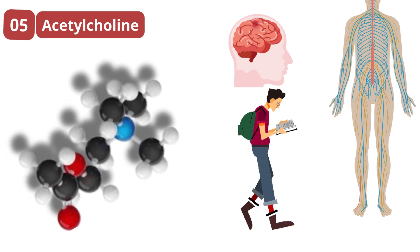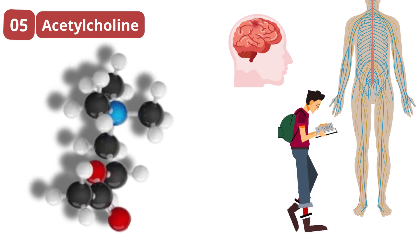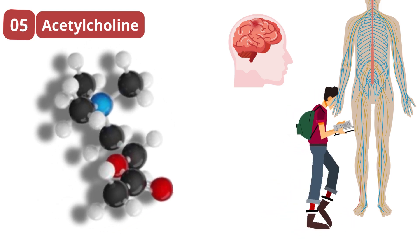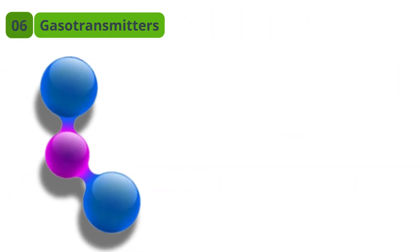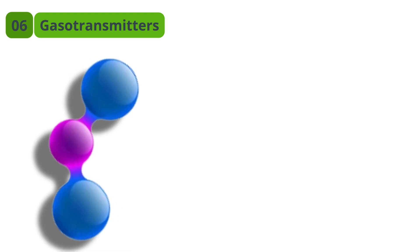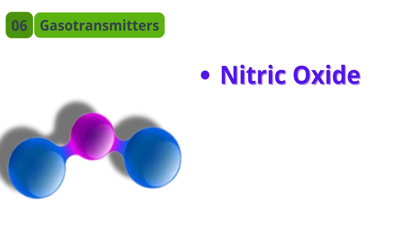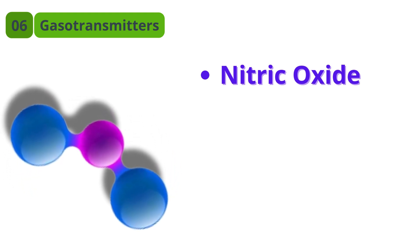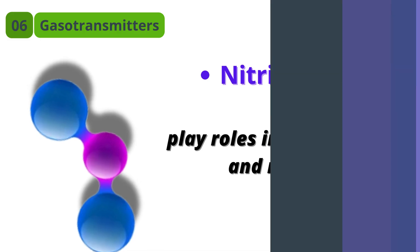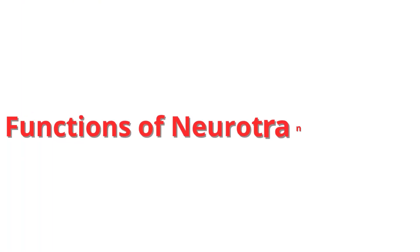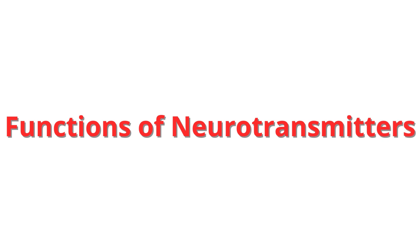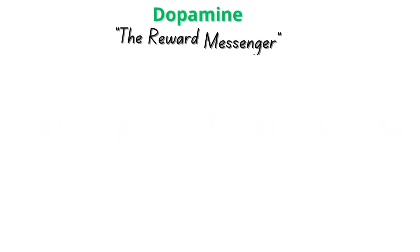Acetylcholine is unique because it's involved in both the central and peripheral nervous systems. It's essential for muscle contraction and learning — think of acetylcholine as the switch that turns on both your muscles and your memory. Gasotransmitters are gases like nitric oxide that act as neurotransmitters. They diffuse freely across membranes and play roles in vasodilation and memory.